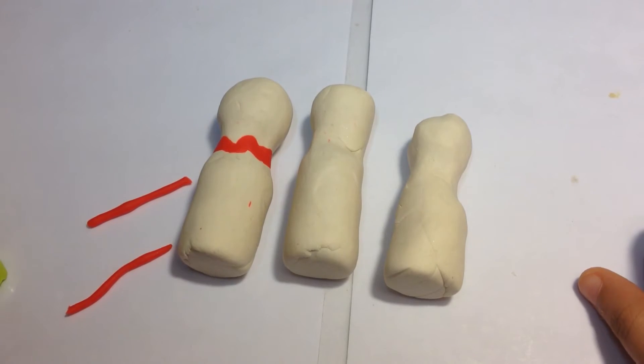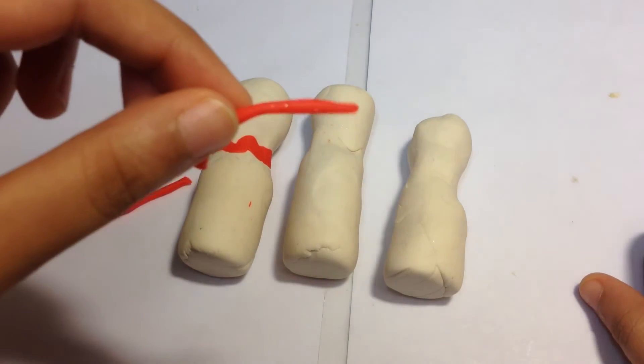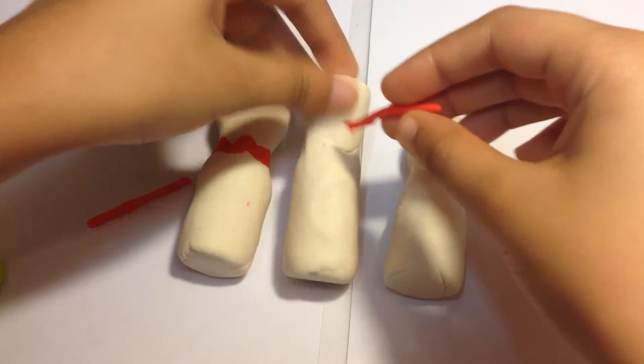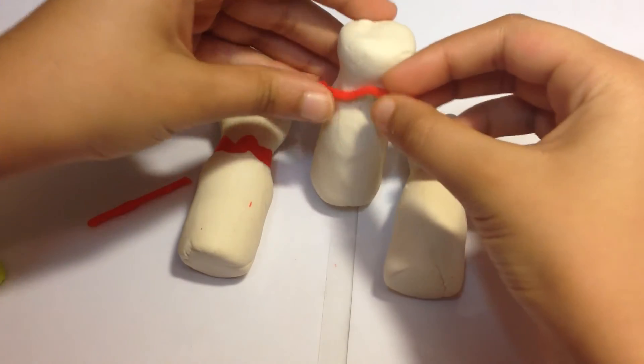Okay, so I made my three pins. And now I'm going to put this red Play-Doh around each one. So I'm going to take it like this.